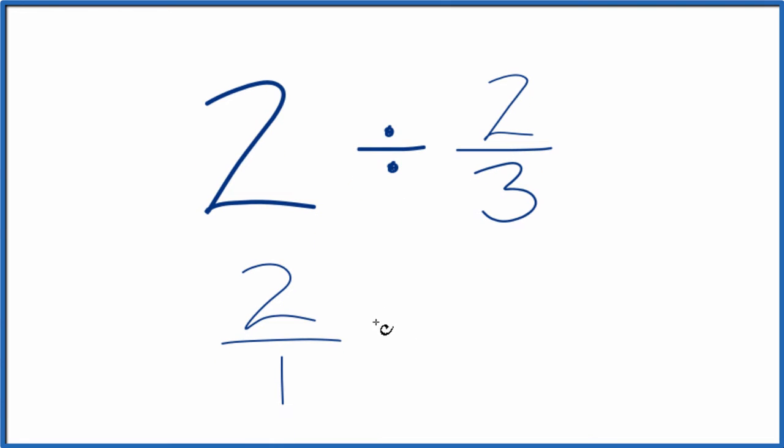Instead of division, let's use multiplication. We're going to multiply by the reciprocal of two-thirds. So we move the numerator to the bottom and the denominator to the top. That'll give us the reciprocal of two-thirds. So we have three over two.